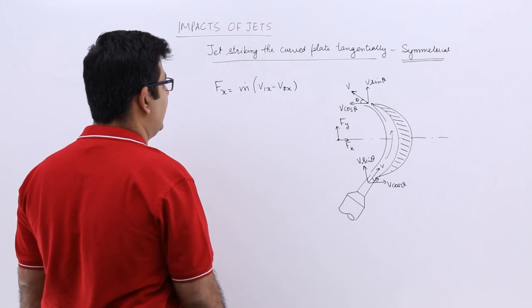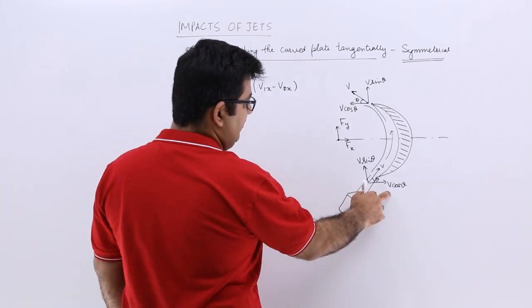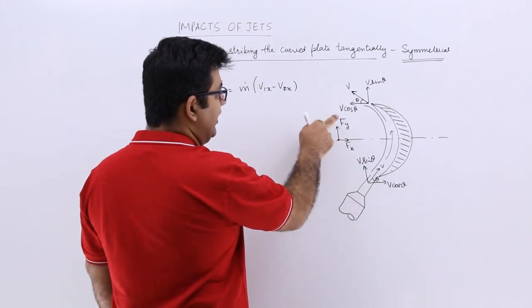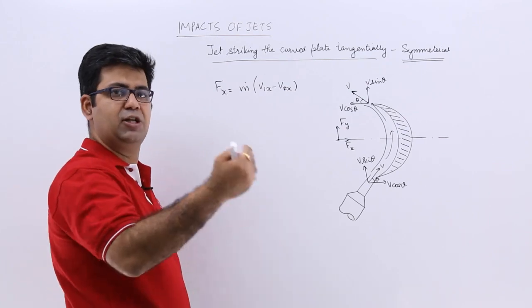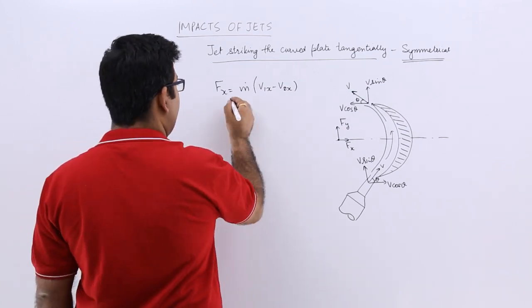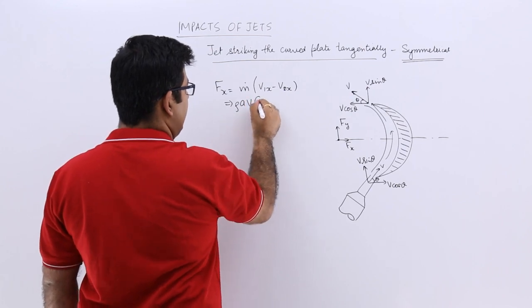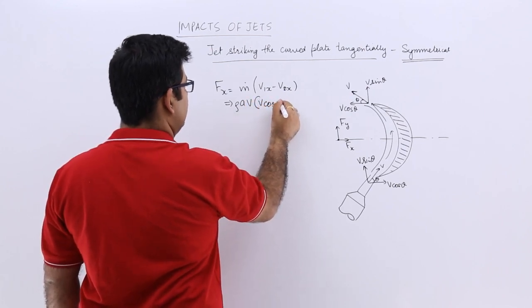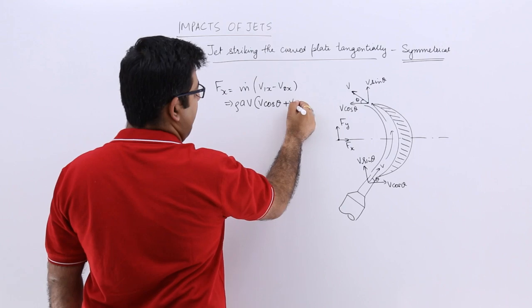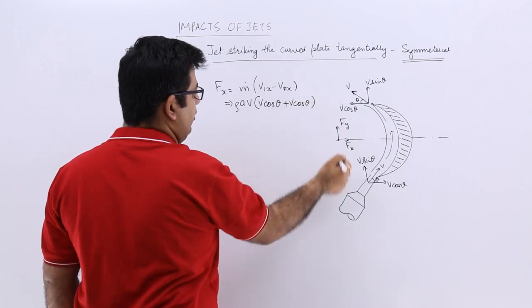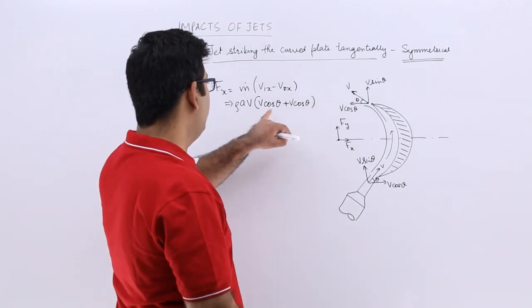Now what is v1x? v1x is v cos theta, and v2x is minus v cos theta because it is in the opposite direction. So you will have rho a into v into v cos theta, minus minus will become plus, and you will have again v cos theta. So this becomes 2 v cos theta.